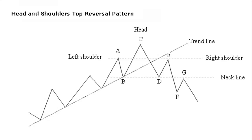The price moves in an uptrend. Only after the pattern has formed, you will recognize A as the left shoulder. The price drops back to the support B of the up-going trend line. From here the price makes a last move up to C, often with lower volume compared to the A move. This will be the head of the pattern.